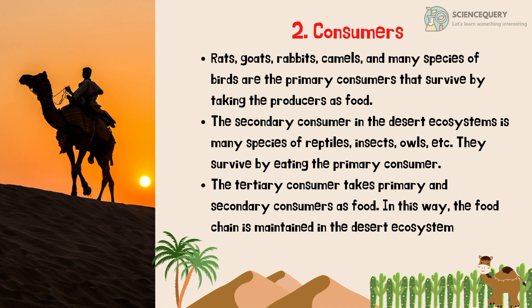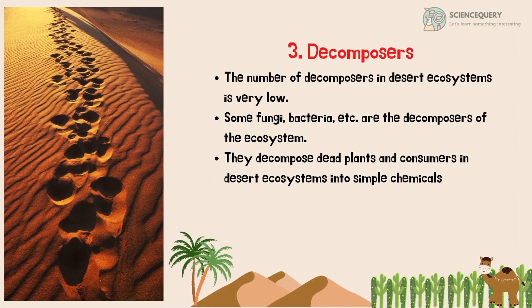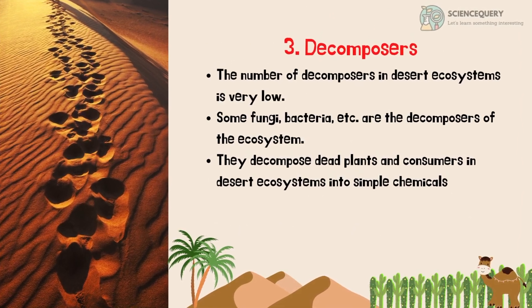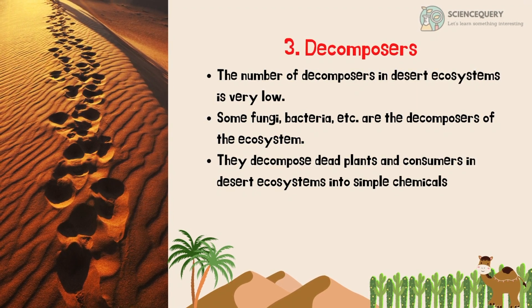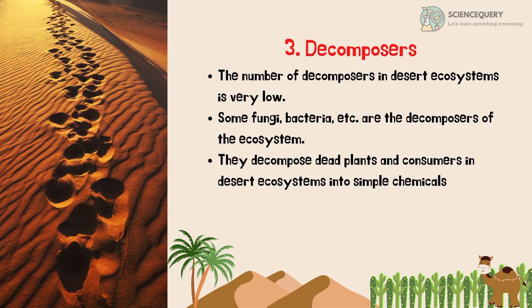The tertiary consumers take primary and secondary consumers as food. In this way, the food chain is maintained in the desert ecosystem. The third biotic factors are the decomposers. The number of decomposers in the desert ecosystem is very low. Some fungi, bacteria, etc. are the decomposers of the ecosystem. They decompose dead plants and consumers in the desert ecosystem into simple chemicals.